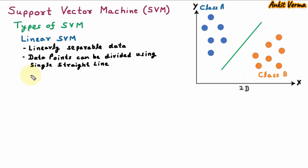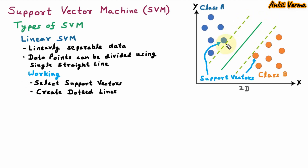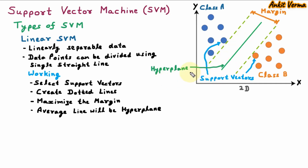Now we are learning the working of Linear SVM. First, select the support vectors — from each class, the data points are selected which are closest to the hyperplane. Next, create dotted lines using the support vectors. Next, maximize the margin — the distance between support vectors and hyperplane is called margin and this margin should be maximum. Now the average of these two lines at maximum margin is called the hyperplane, also called the decision boundary.